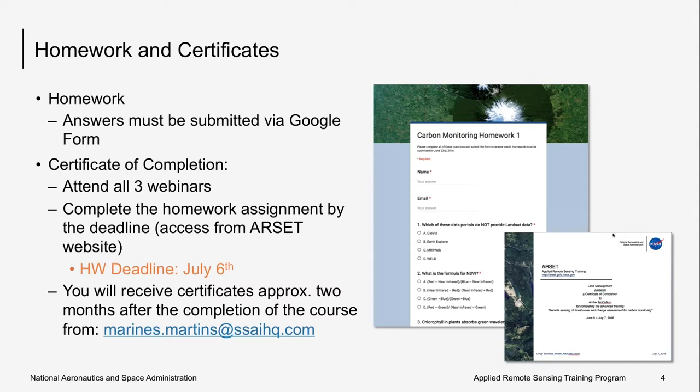To receive credit for homework, you must submit all answers via Google Forms by July 6, which will be two weeks after the last session. To receive a certificate of completion, you must attend all live webinars and complete the homework. It takes some time to process these certificates, so you can expect to receive them about three months after the completion of this course.